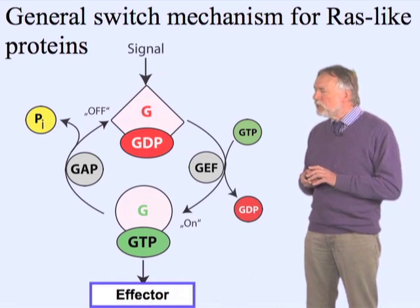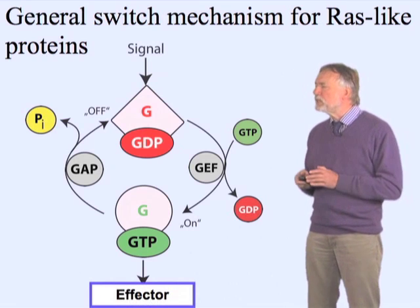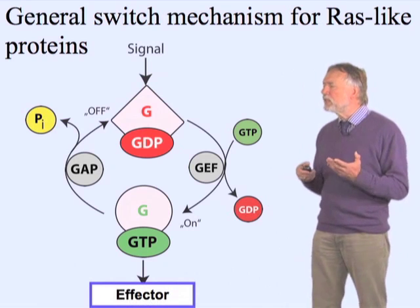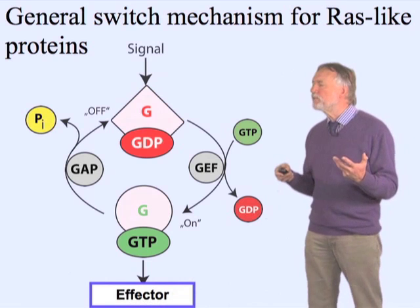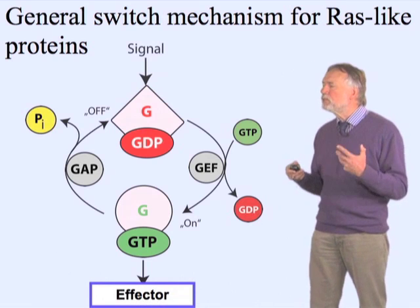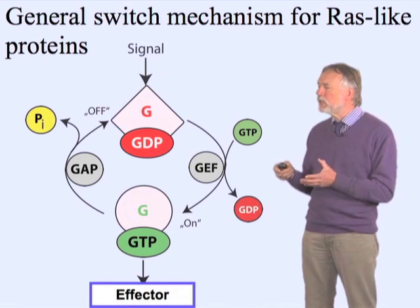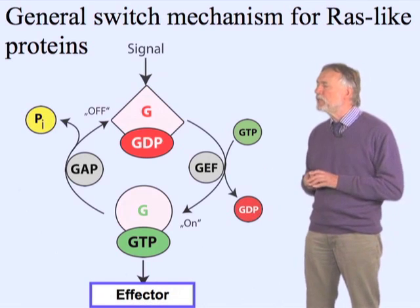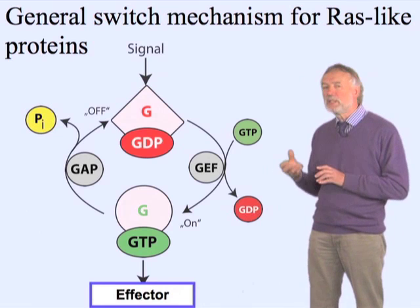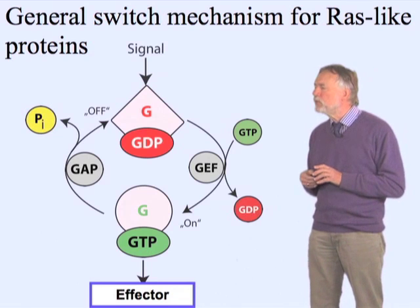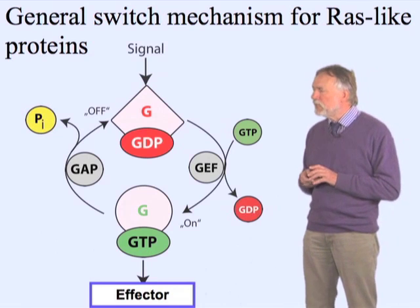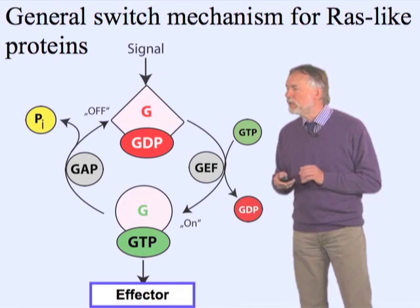The downstream effector is something that mediates the biological effect. An effector is a molecule that recognizes specifically only the active GTP-bound form and not the inactive GDP-bound form.